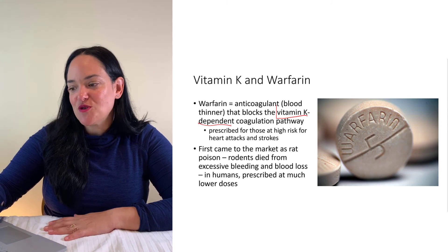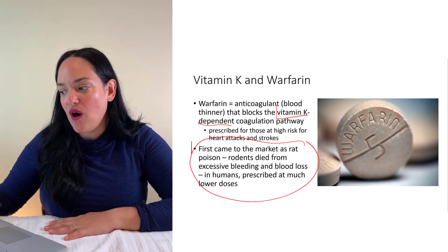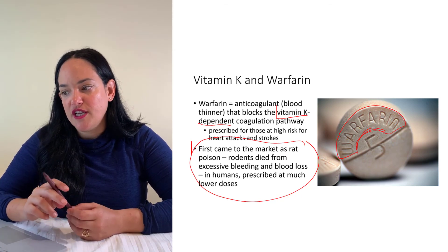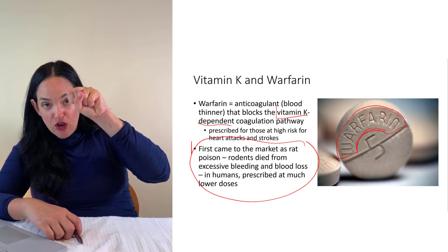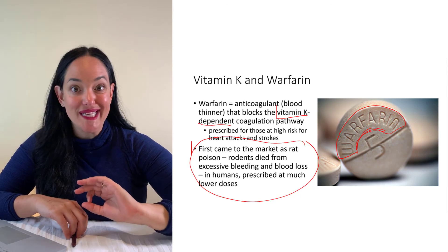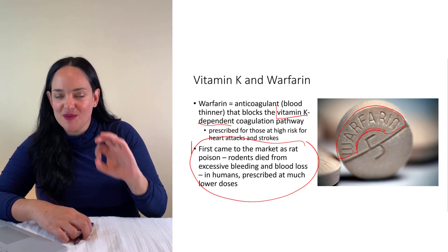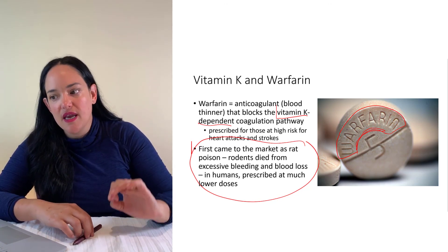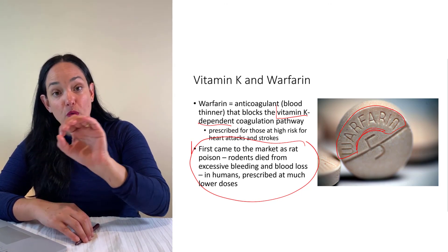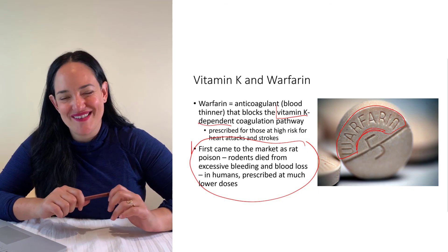Blocking the vitamin K pathway means blood doesn't clump together — it becomes very thin, increasing the risk of excessive bleeding. There are certain products that block the vitamin K pathway, and interestingly, they first came to market as rat poison, causing rat death by excessive bleeding. However, drugs that block the vitamin K pathway — like warfarin — are now prescribed for individuals at higher risk for heart attacks and strokes, where a blood clot could block an already narrowed artery. Lower doses are given to help prevent that from occurring. To summarize: fat-soluble vitamins need to be transported with lipids and are more likely to cause toxicity symptoms. I recommend making a chart for each vitamin covering its functions, symptoms of deficiency, symptoms of toxicity, and food sources — that's the best way to study for this unit.